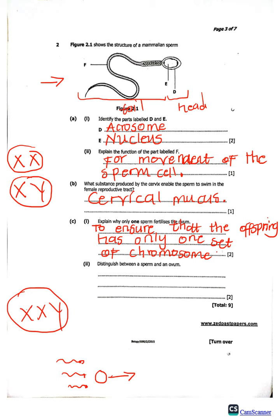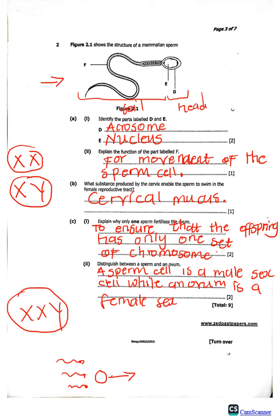Now let's look at roman number two: distinguish between a sperm and an ovum. Both are sex cells, but one is produced by a male and the other by a female. A sperm cell is a male sex cell, while an ovum is a female sex cell. The sperm is produced by a man while the ovum is produced by a female.